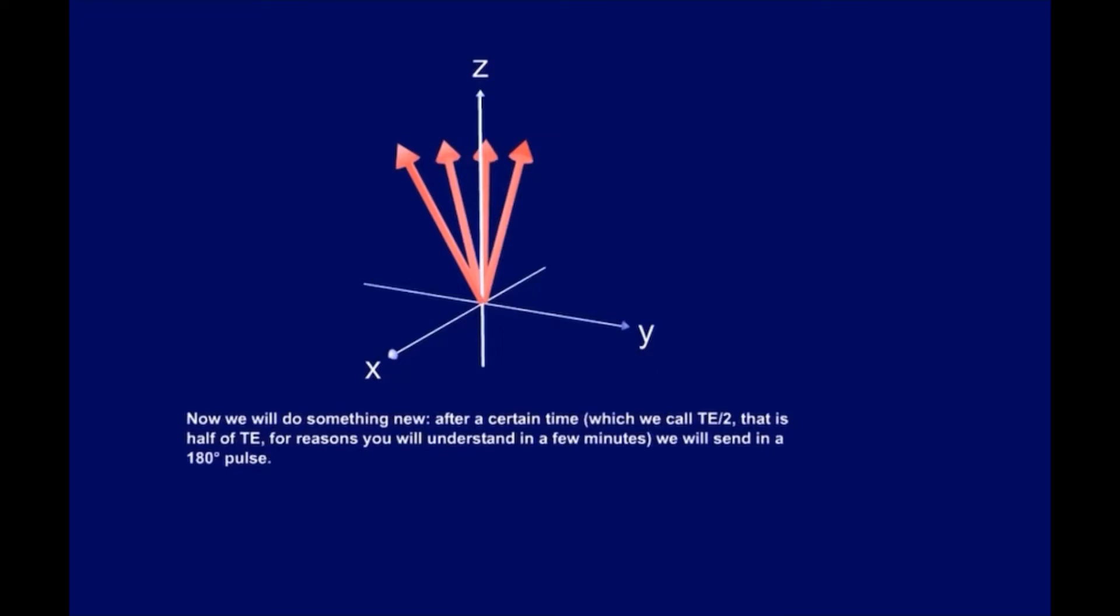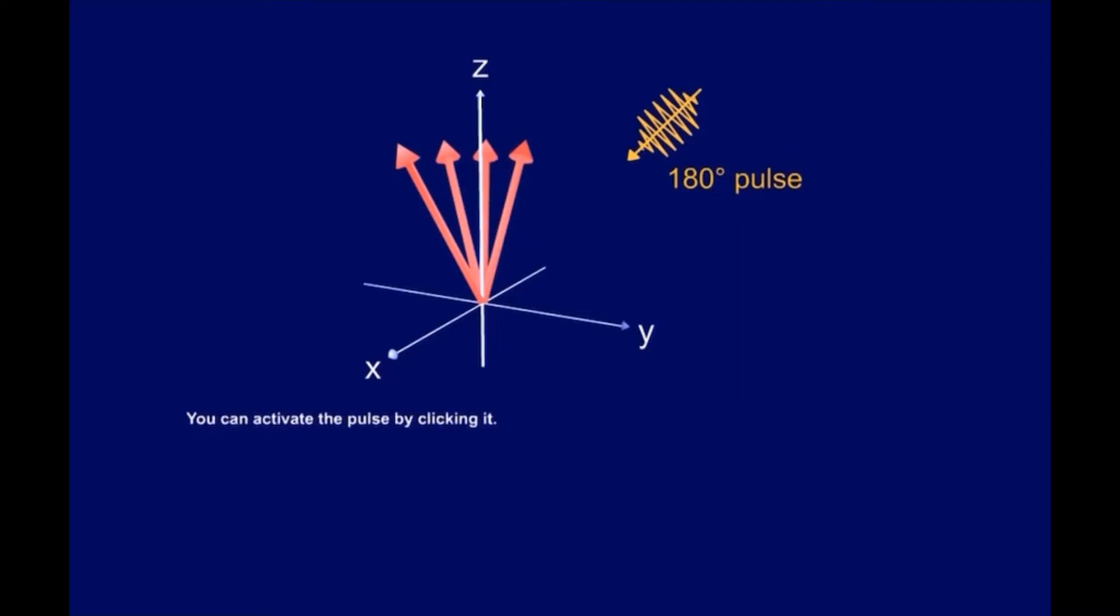Now we will do something new. After a certain time, which we call TE divided by 2, that is half of TE, for reasons you will understand in a few minutes, we will send in a 180-degree pulse. You can activate the pulse by clicking on it. Then, watch what happens.